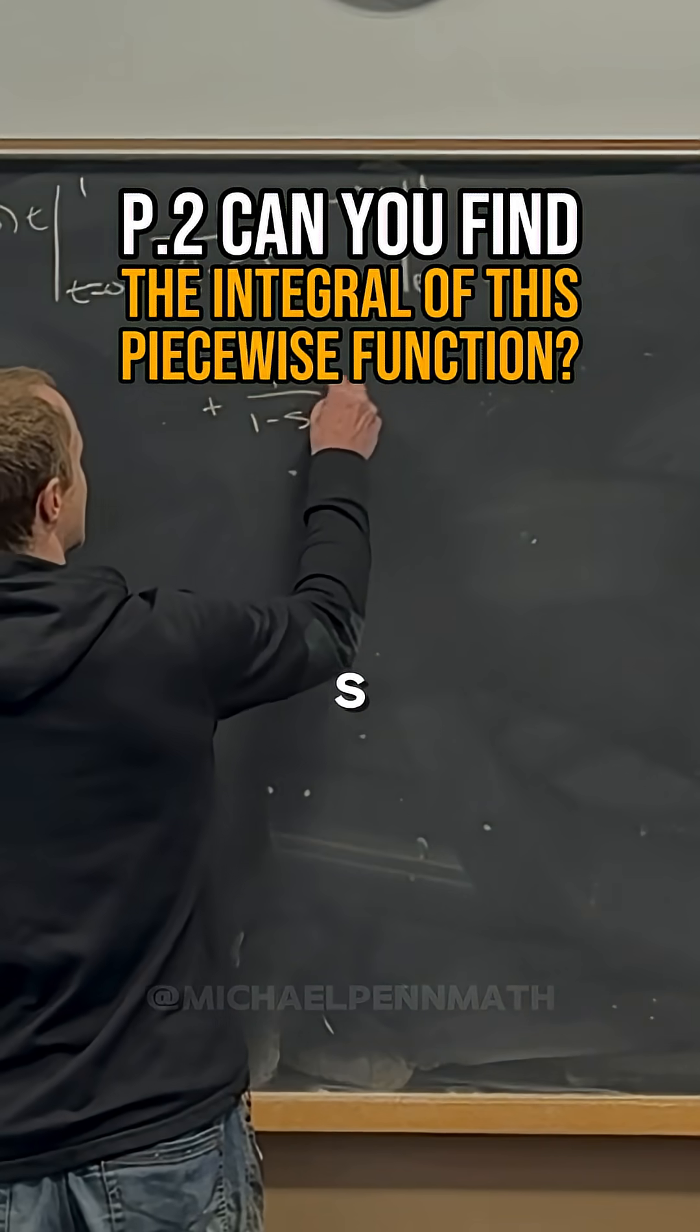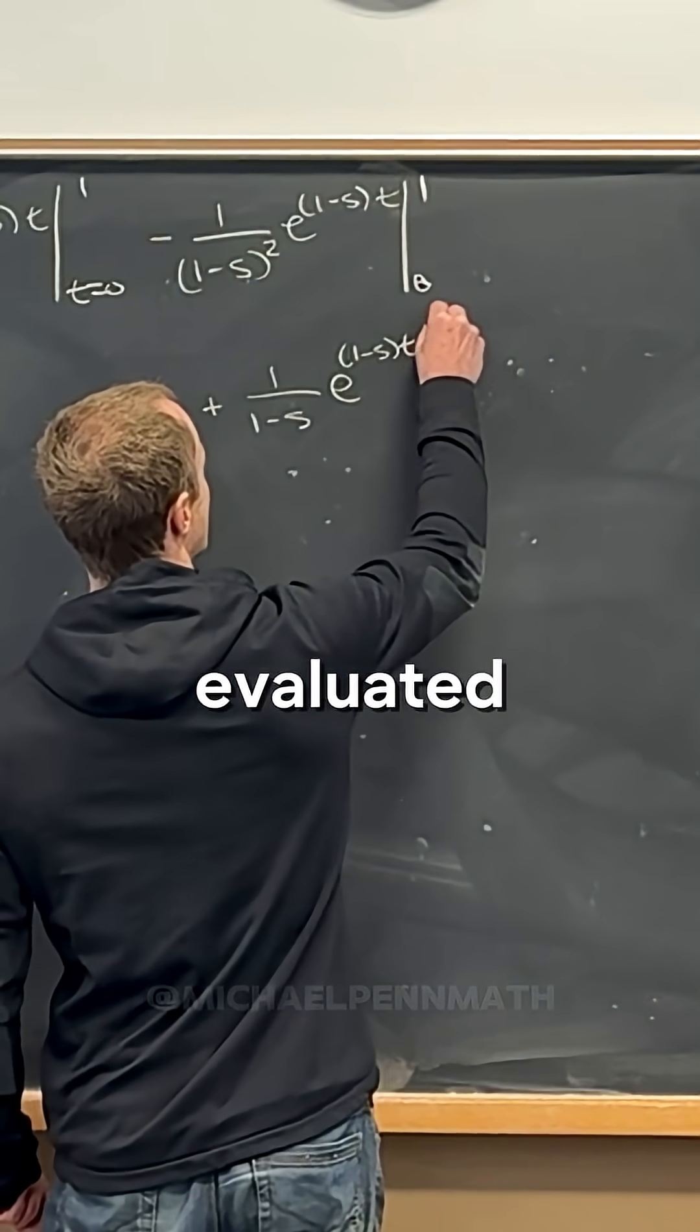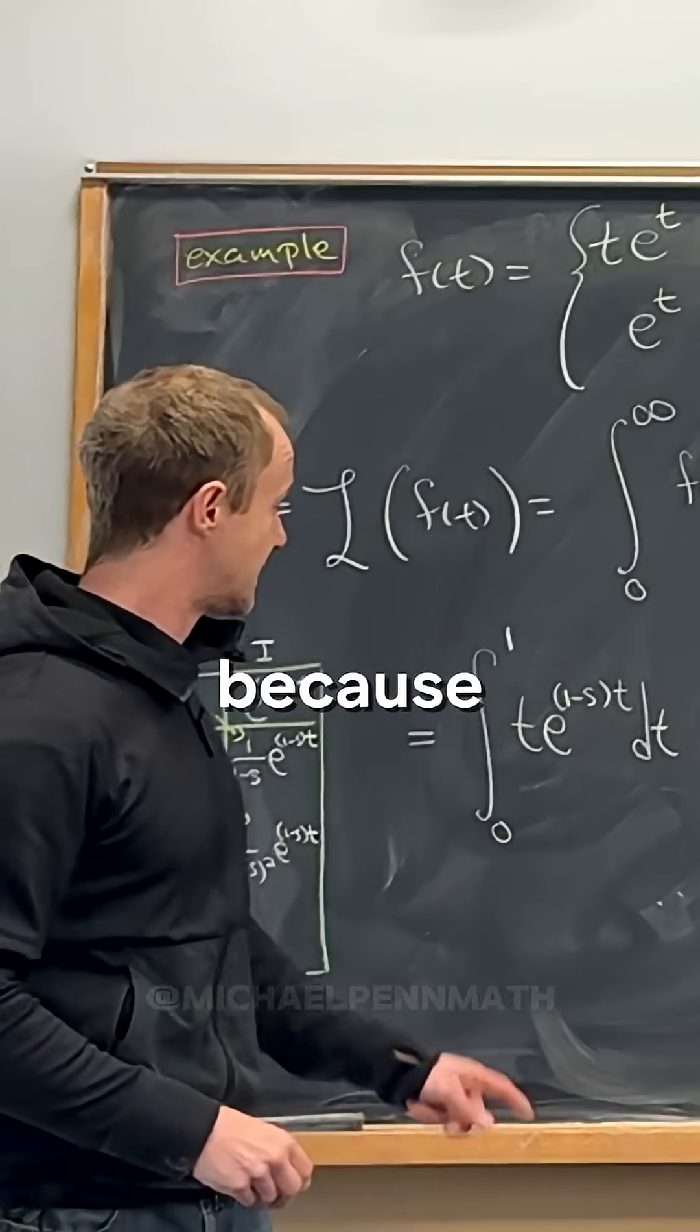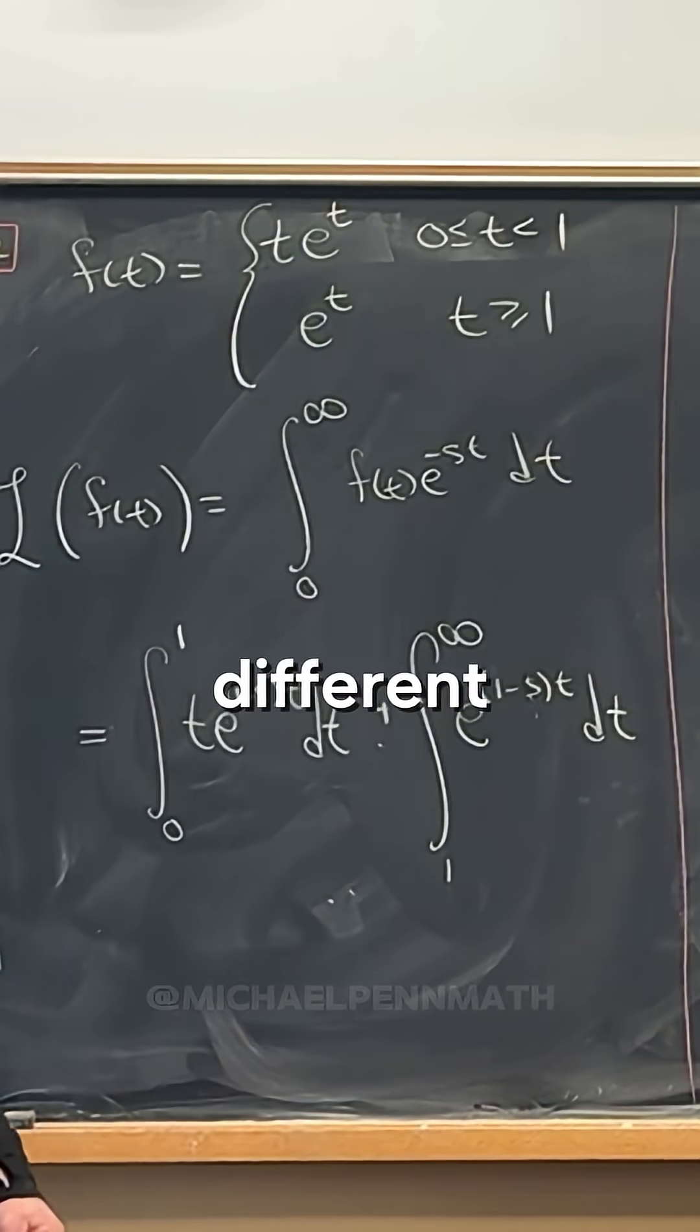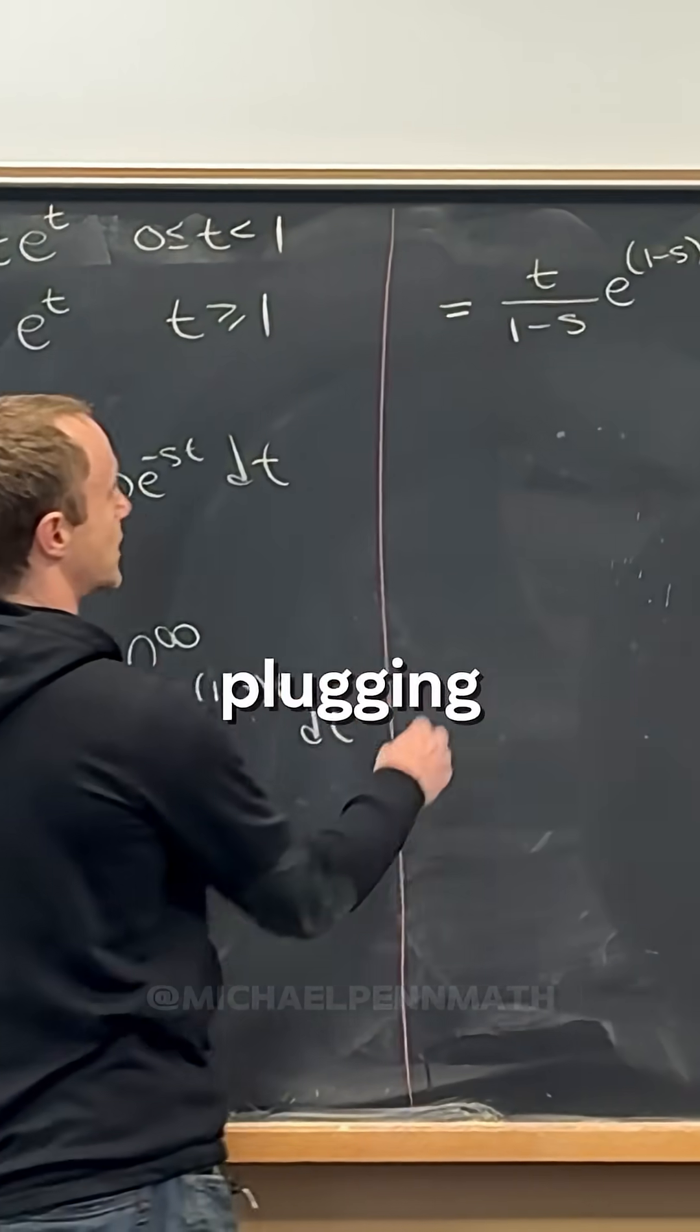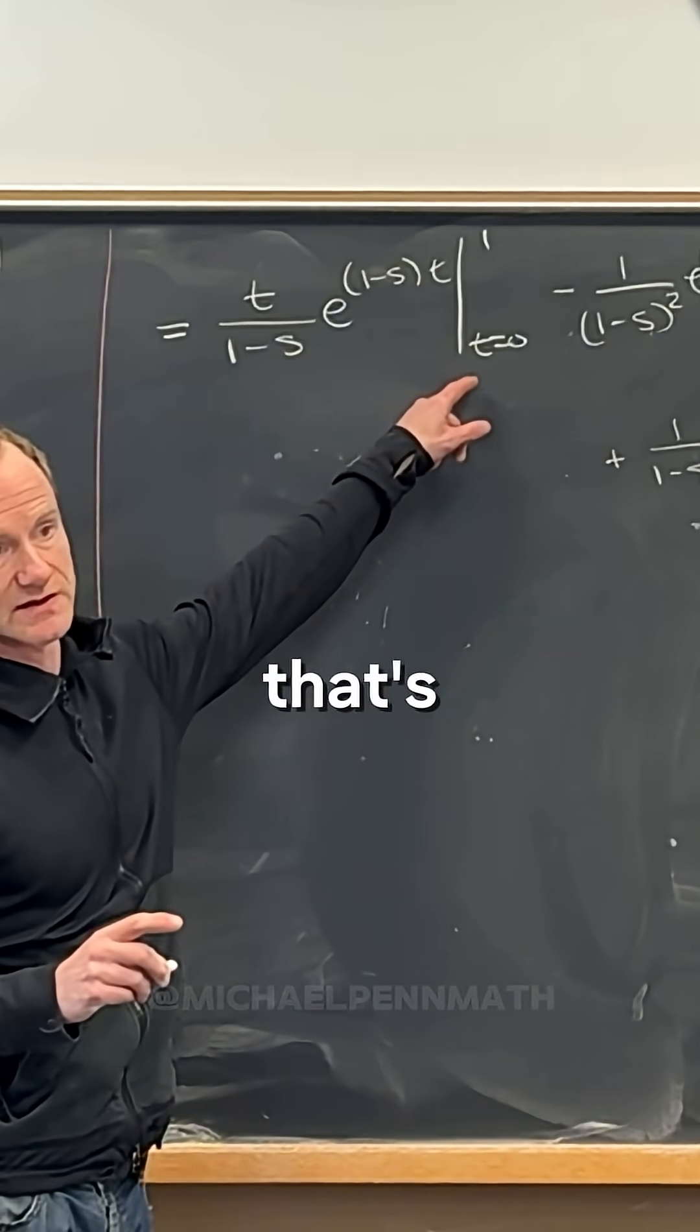Plus one over one minus s, e to the one minus s times t, evaluated from one to infinity, right? Because the domain, the range of interval of integration is different. Okay, so now we can start plugging some things in. So remember we're plugging in for t.